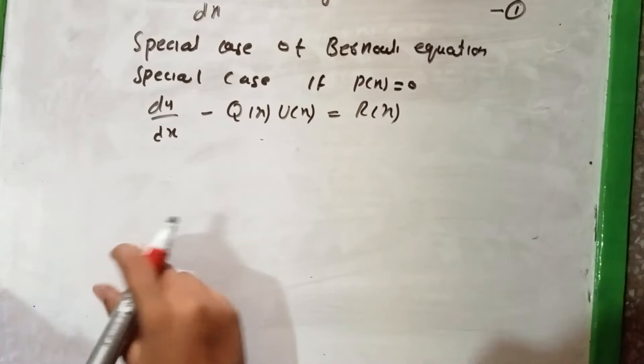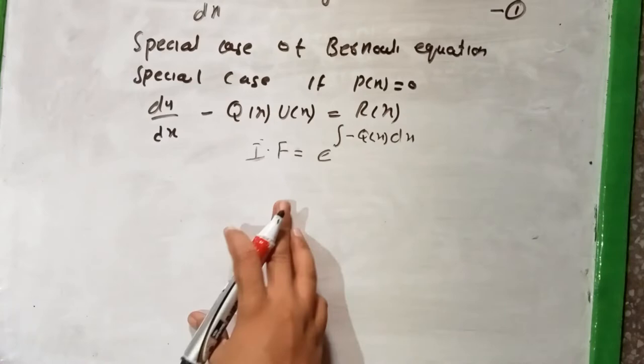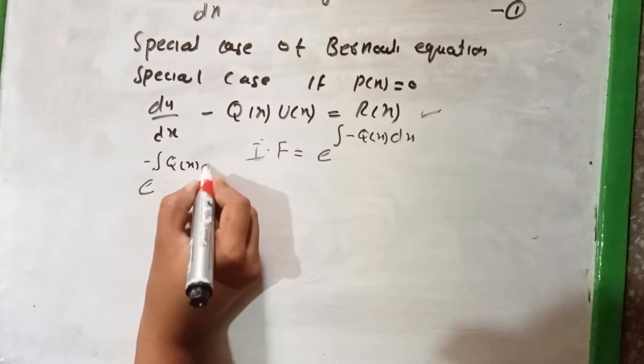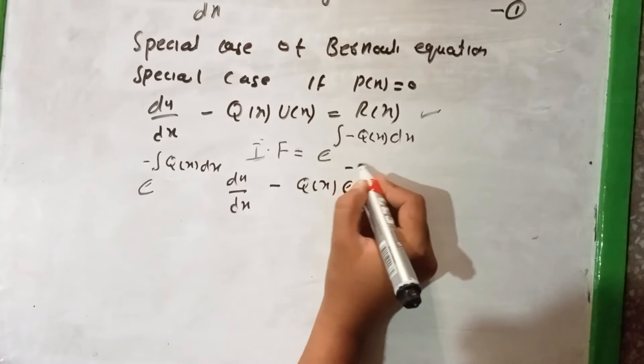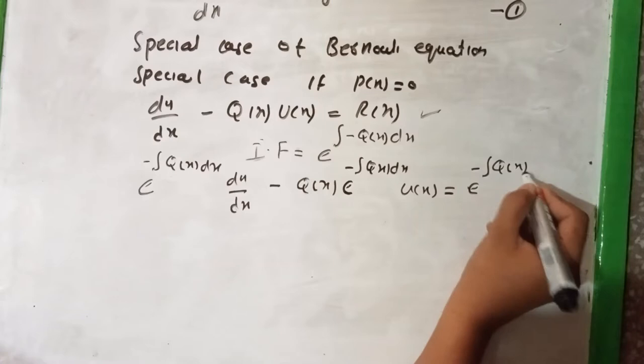The integrating factor of this equation is exp(−∫q(x)dx). We multiply the equation by this integrating factor, giving: exp(−∫q(x)dx) times du/dx minus q(x) times exp(−∫q(x)dx) times u(x) equals exp(−∫q(x)dx) times r(x).